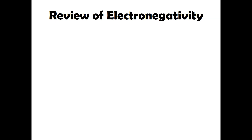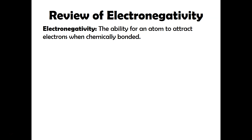Before we start talking about Lewis structures we need to discuss electronegativity. Electronegativity is basically where you have two atoms that are essentially attracting electrons, and these are usually involved in a chemical bond. This is a quantity that is calculated given a bunch of different conditions — it's not actually measured directly in the lab, but this is a trend that you most likely learned about on your periodic table when you were doing periodic trends.